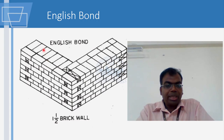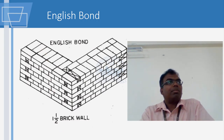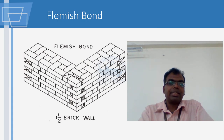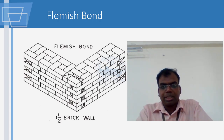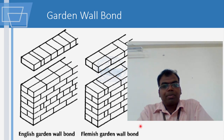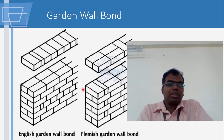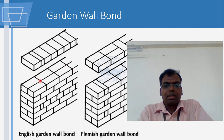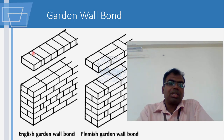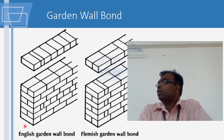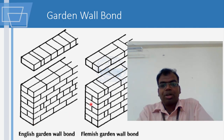Now look at the Flemish bond - look at the way the bricks are arranged: header, immediately below the stretcher, then header again. In none of these cases will you find the vertical joints in one straight line. This is the aim of keeping a bond - this is the aim of arranging the bricks in a bond.